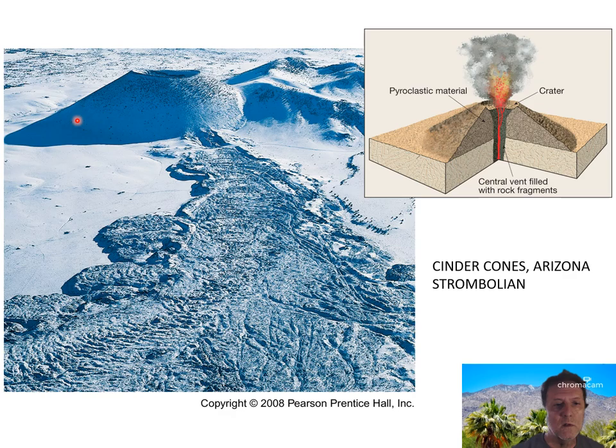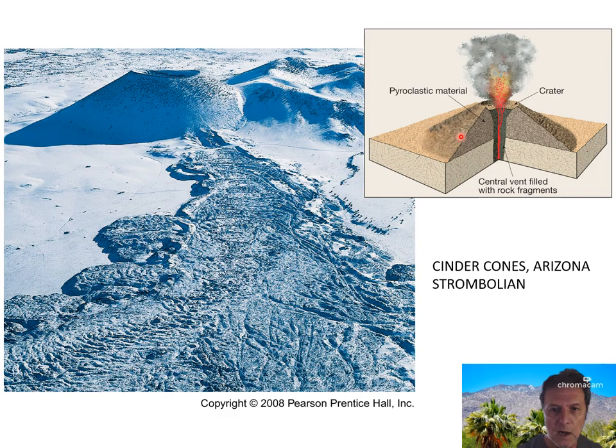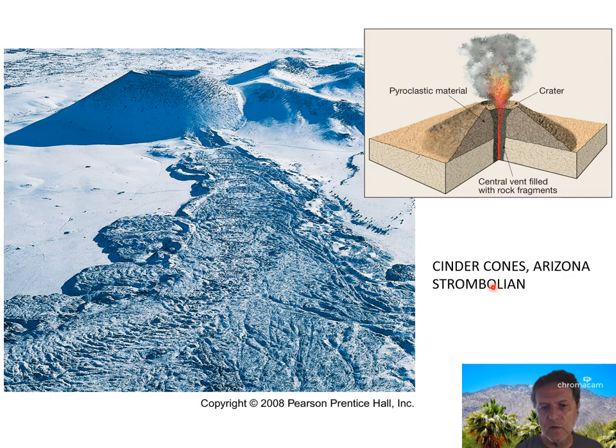Here's a cinder cone — one of the craters in the Sunset Crater area. As you can see, it has steep sides composed primarily of pyroclastic material or rock fragments, with a central crater. A lot of the lava that comes out of these cinder cones doesn't come out of the top — it breaks through because the cinder cone itself is a fairly weak structure composed of loose fragments. So the lava can actually burst through the side or the bottom of the cinder cone itself.